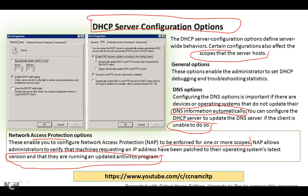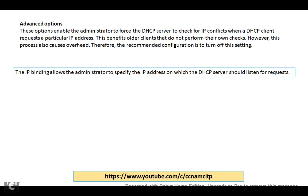Another option is Advanced. These options enable the administrator to force the DHCP server to check for IP conflicts when the DHCP client requests a particular IP address. So the IP conflict check is configurable here. This benefits older clients that do not perform their own conflict check. However, this process also causes overhead, which can be a problem.